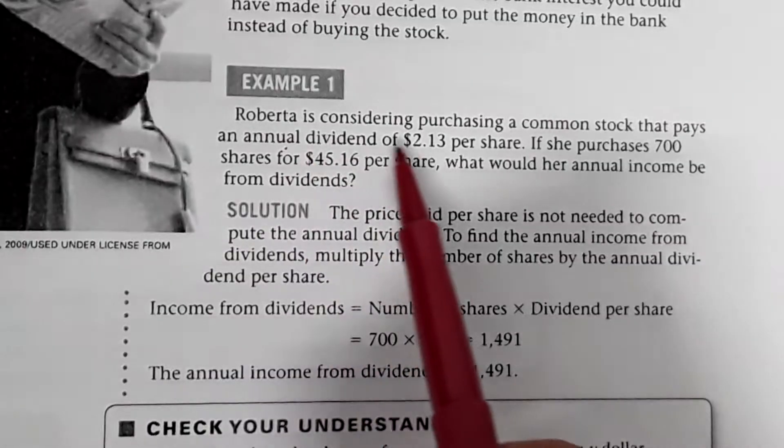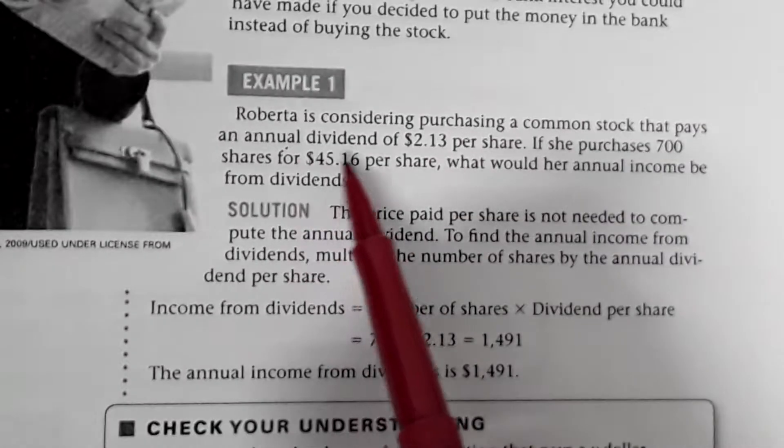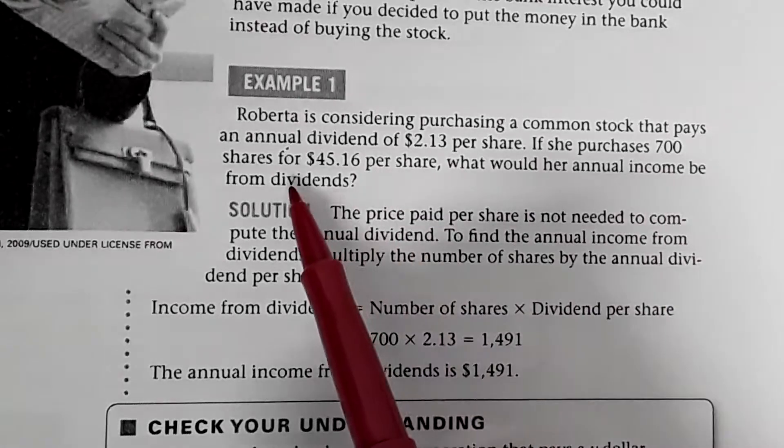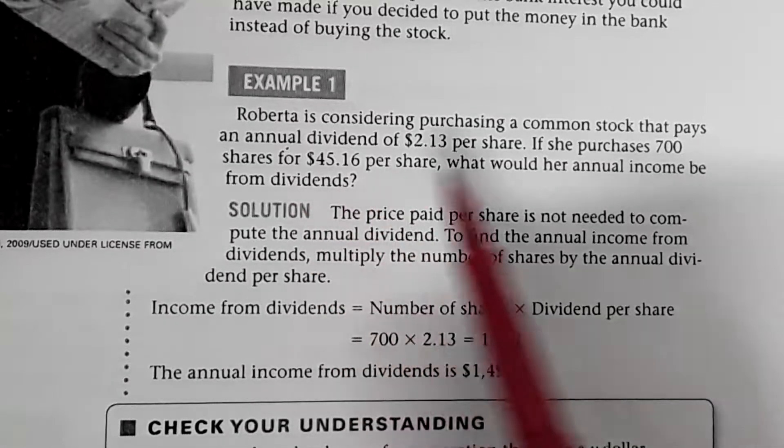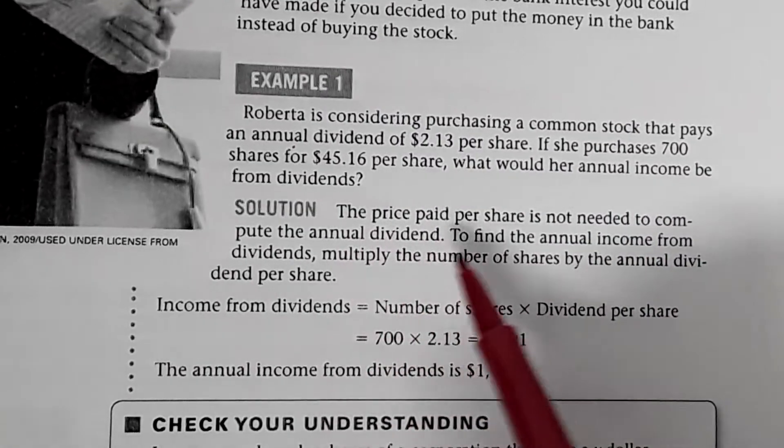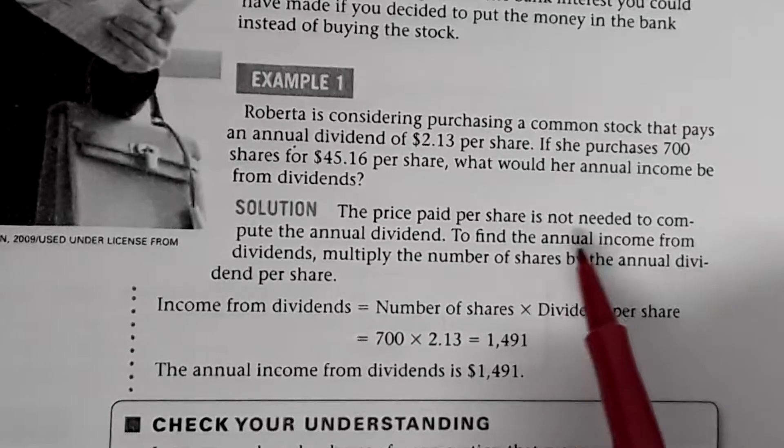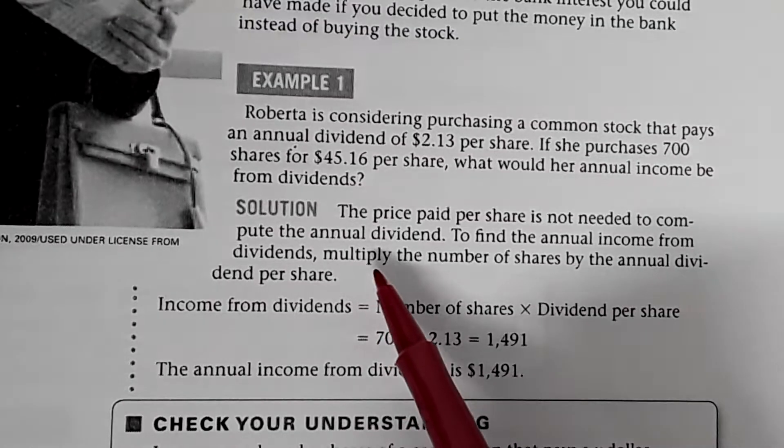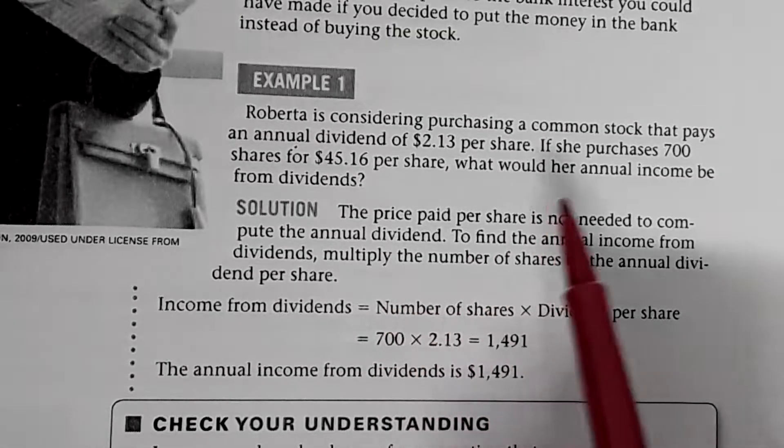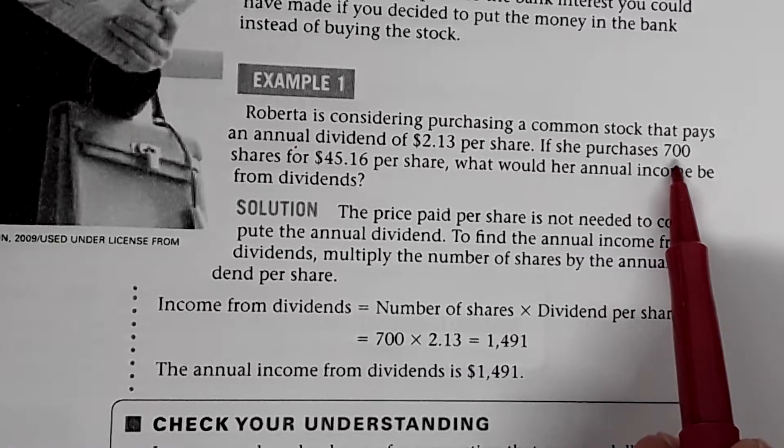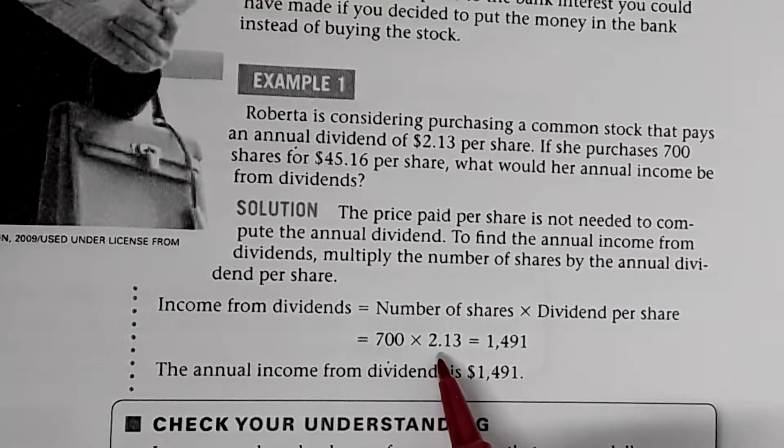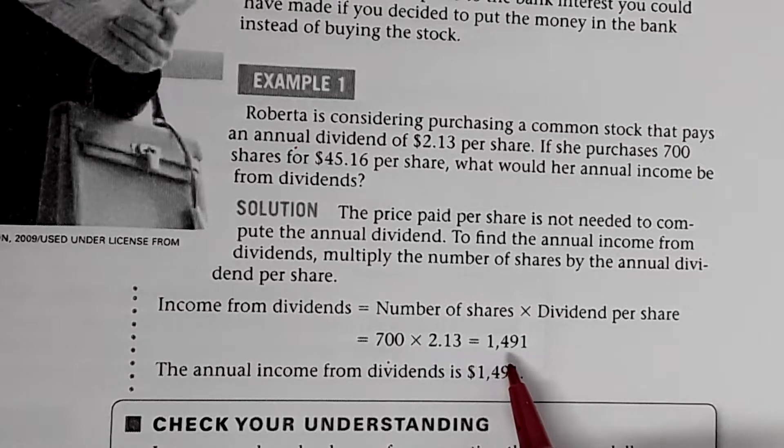So in example one, Roberta is considering purchasing a common stock that pays an annual dividend of $2.13 per share. If she purchases 700 shares at $45.16 per share, what would her annual income be from dividends? The price paid per share is not needed to compute the annual dividend. To find the annual income from dividends, simply multiply how many shares she owns by the dividend. So 700 times $2.13 is $1,491.